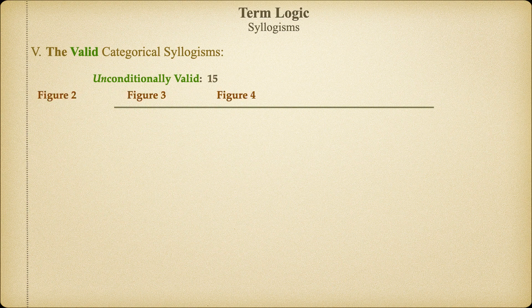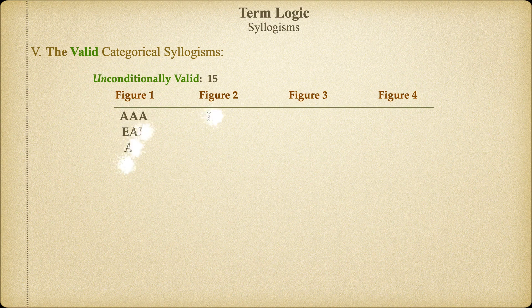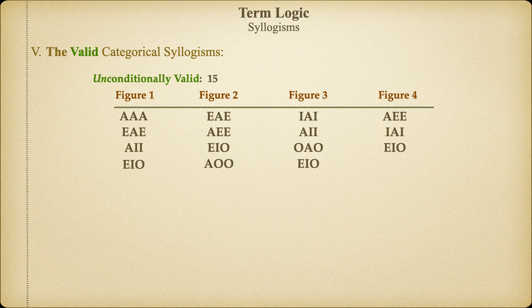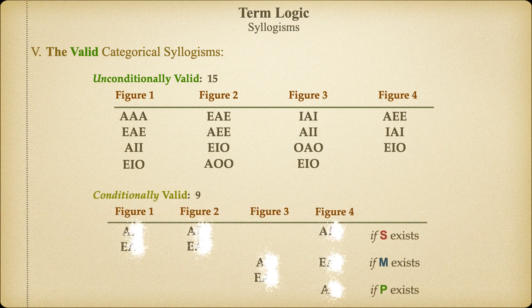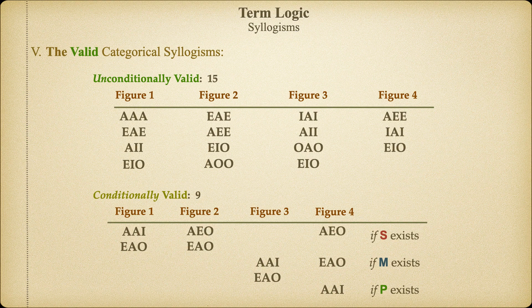Applying our five rules to all possible categorical syllogisms, it turns out that 15 will be unconditionally valid — valid from both the Aristotelian and Boolean points of view. However, there will be a further nine syllogisms that are conditionally valid, meaning valid from the Aristotelian point of view assuming the existence of the major, minor, or middle term depending on the figure and mood of the syllogism. Now you have all the knowledge you need to build and demonstrate the validity of categorical syllogisms.